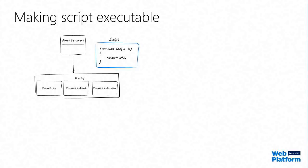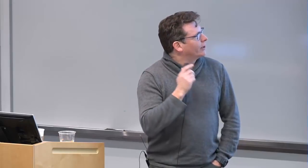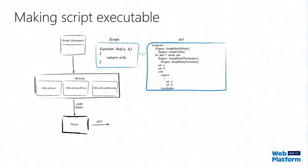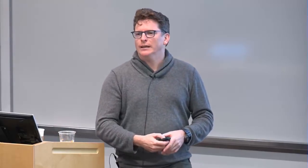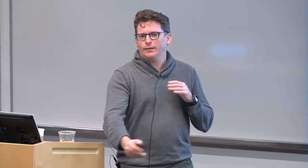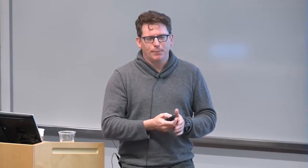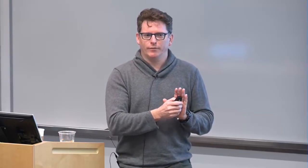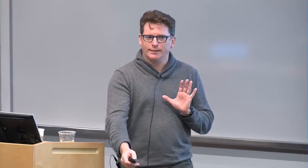So let's walk through a little script. We get script from Edge, we receive it through our hosting API. We have a simple function just doing A plus B. We convert the source to UTF-8 and it goes through the parser. There are two forms of parsing — you may have heard the term deferred parsing. The initial scan of the script doesn't build an AST, which is the slowest part of the parser. We just look for syntax errors and build internal data structures to figure out where all the different functions are.